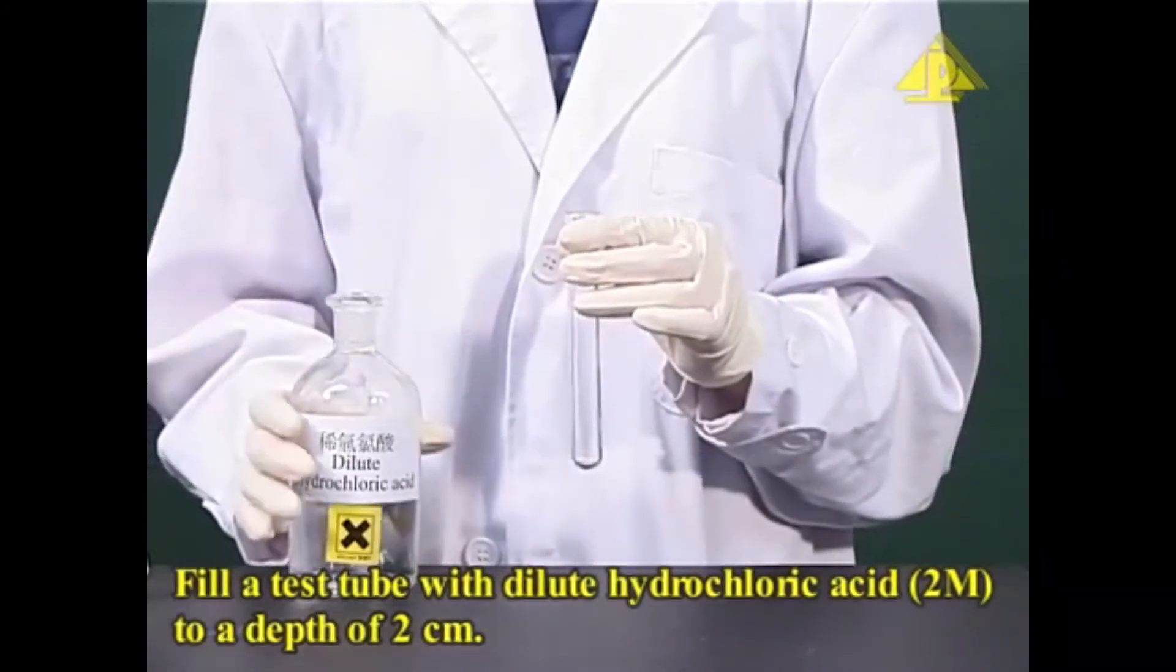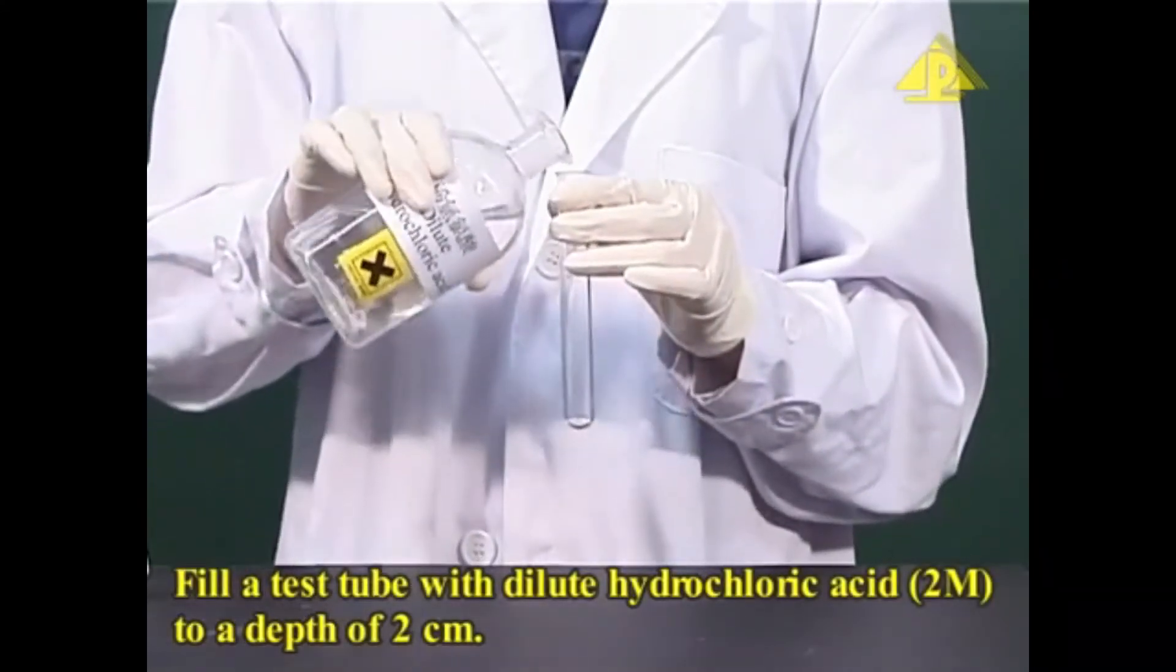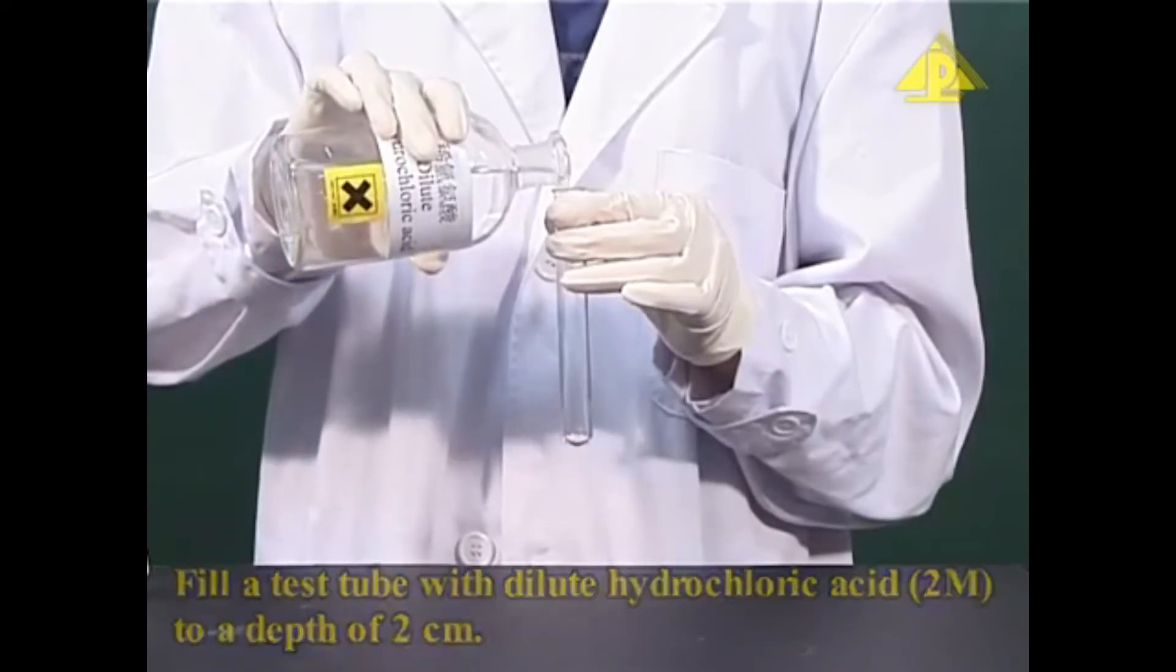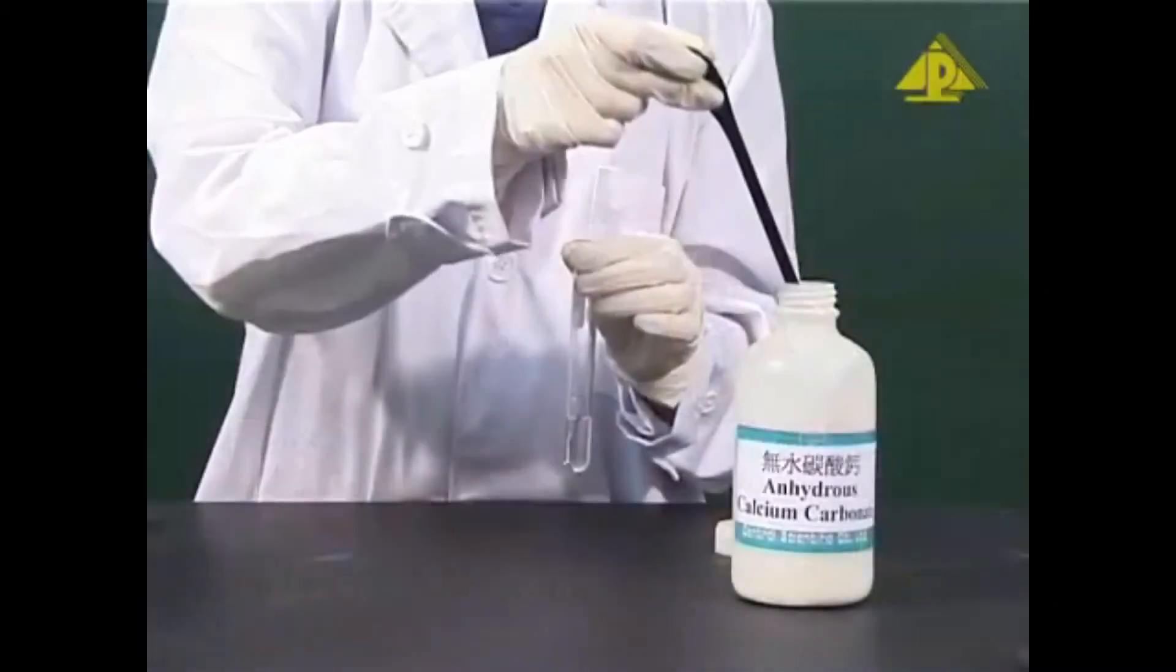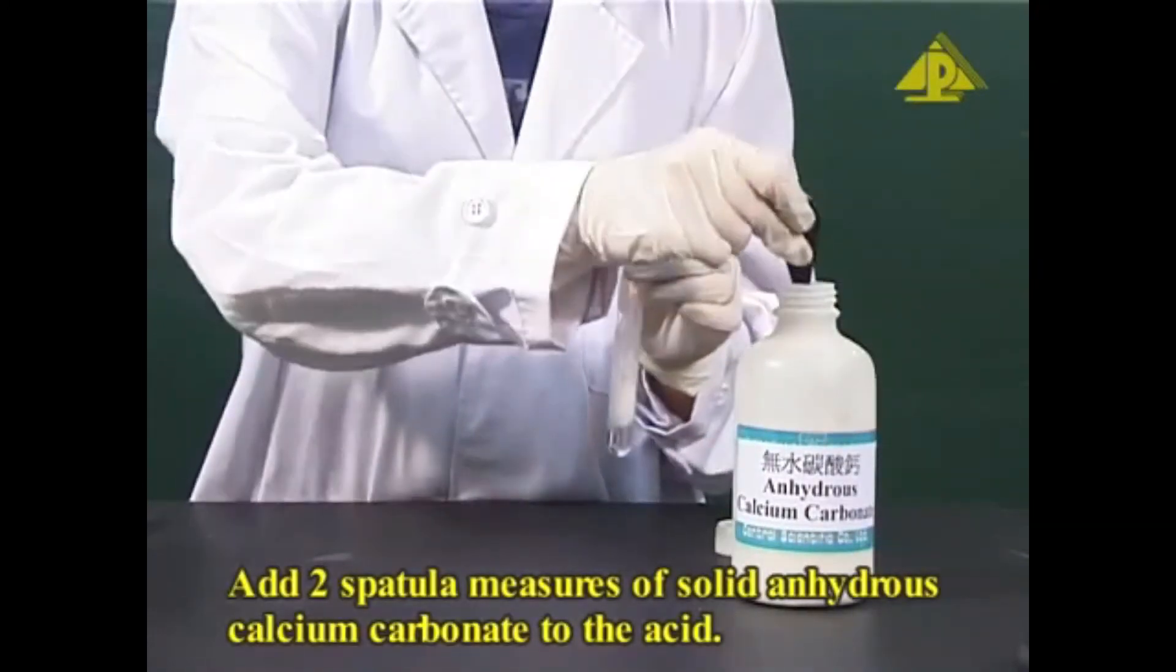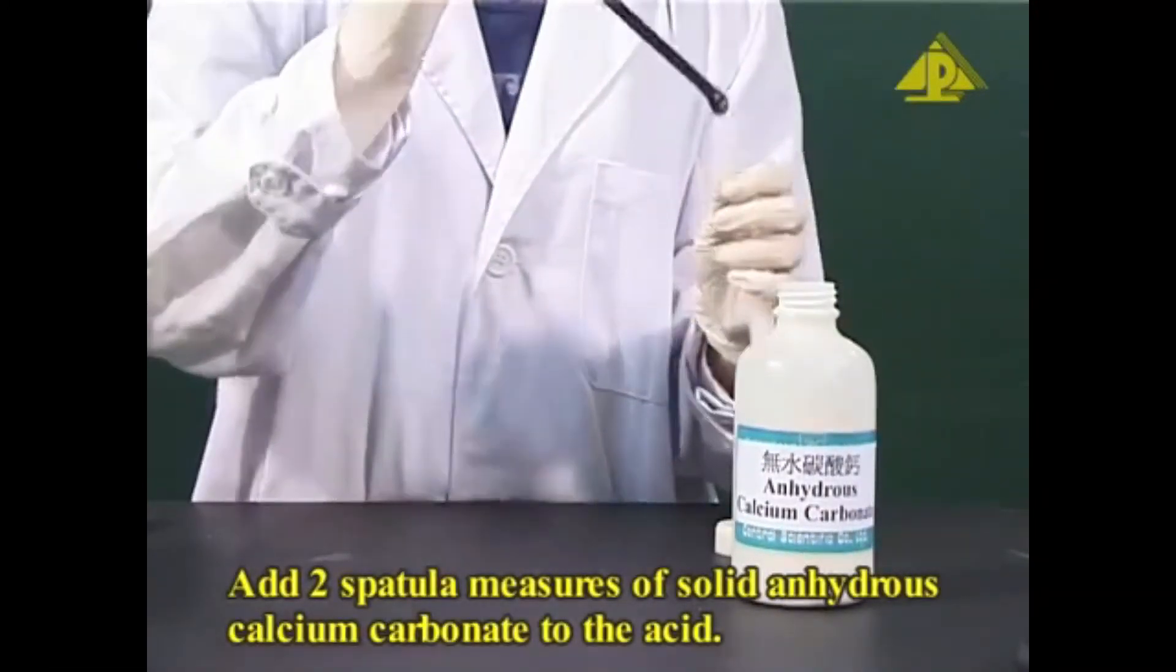Fill a test tube with dilute hydrochloric acid to a depth of 2 cm. Add two spatula measures of solid anhydrous calcium carbonate to the acid.